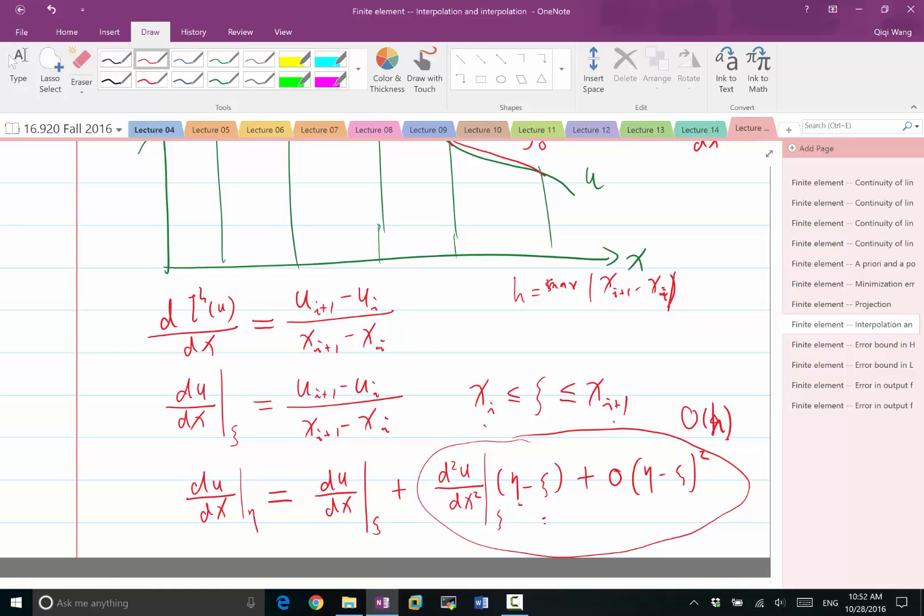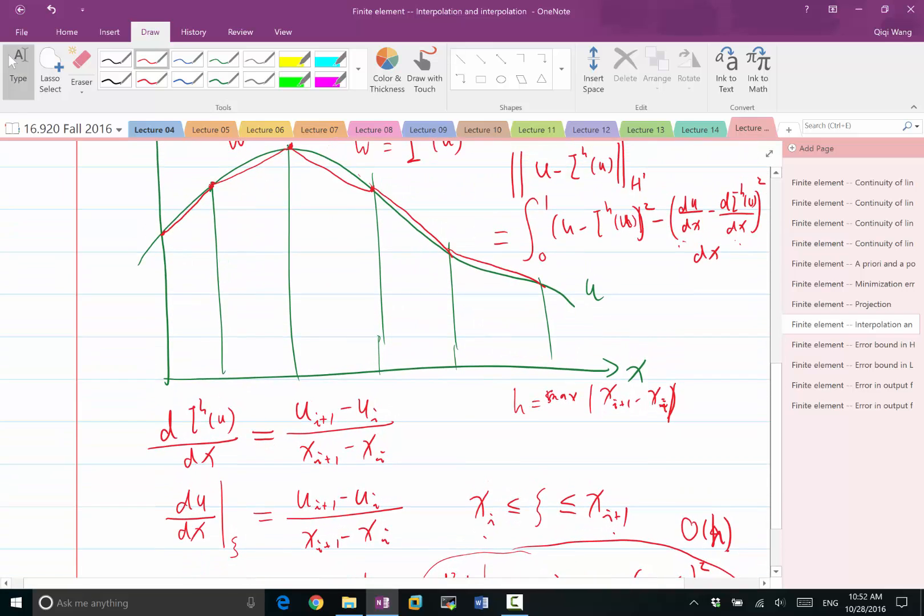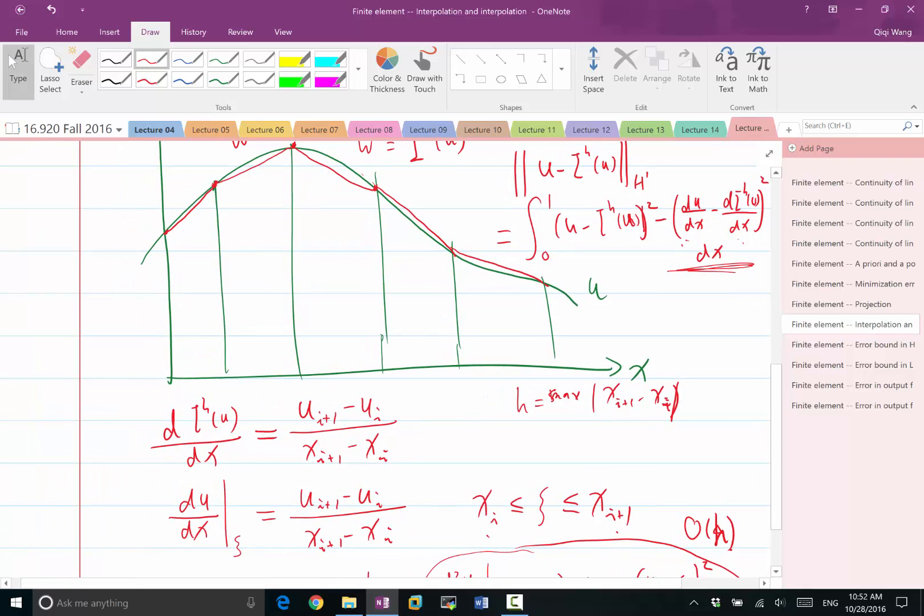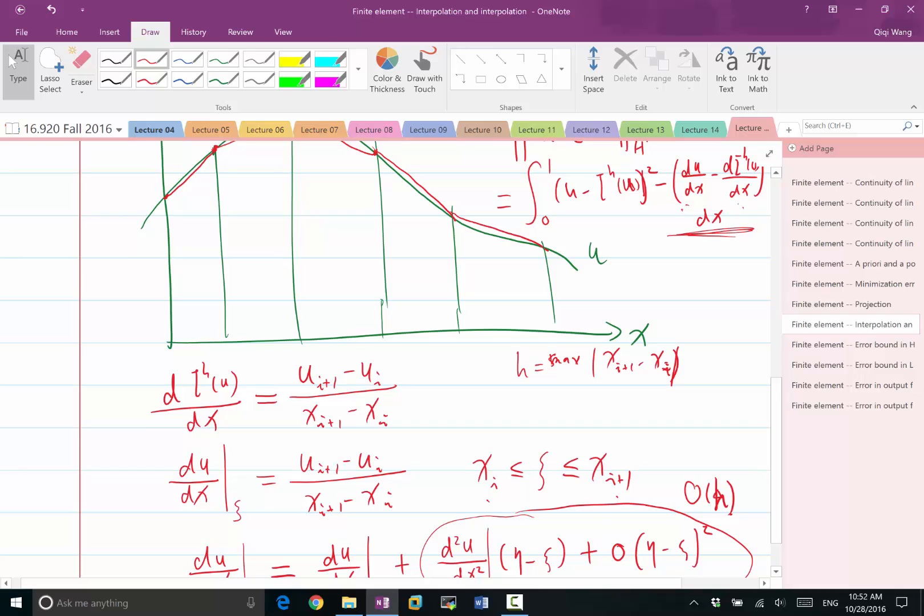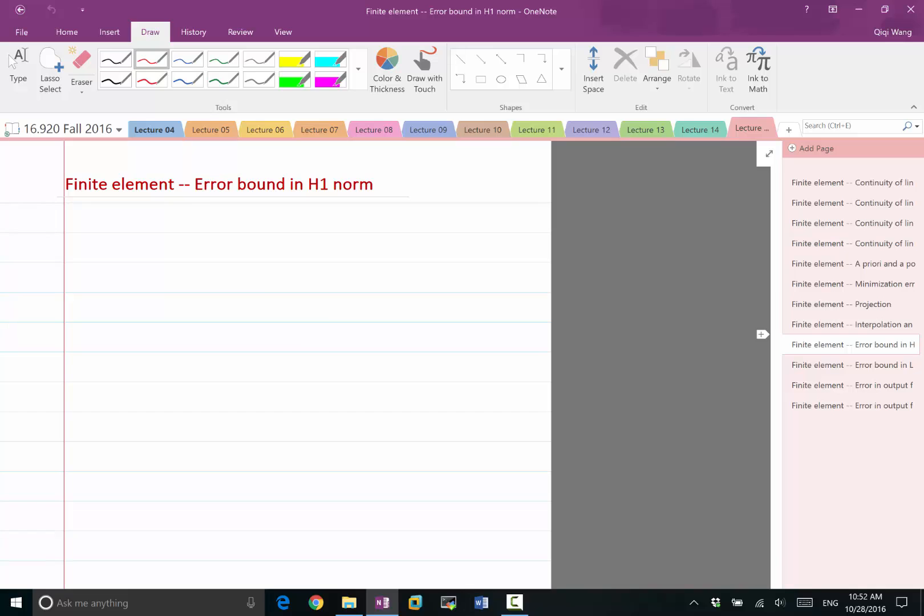So we already know that the derivative term in the Sobolev norm has to be order H. And it turns out the same thing happens for the value. The value is actually a lot easier.